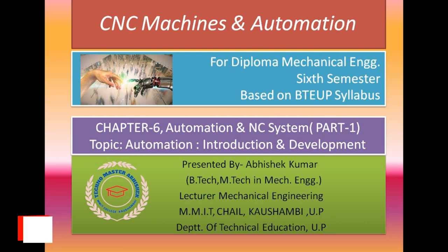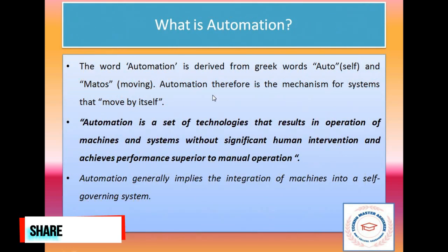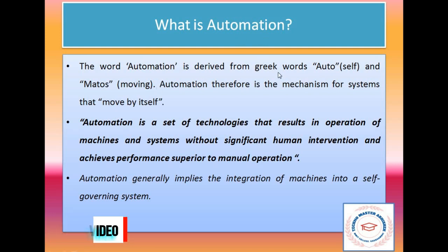Let's understand what automation means. The word 'automation' comes from two Greek words: 'auto' meaning 'self', and 'metas' meaning 'moving'. So basically, auto plus metas gives us 'self-moving' — that is the origin of the word automation.